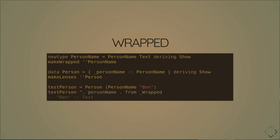The thing that might not be obvious about `Wrapped` is that because it's an ISO, for it to be lawful, you have to be able to say that all Texts can actually be PersonNames. If you had some text that couldn't actually be a PersonName — say, if you had a smart constructor filtering the domain of Text — then `Wrapped` is not the thing you want. You want a prism, because you want to establish in your optics that not all texts can actually be PersonNames.